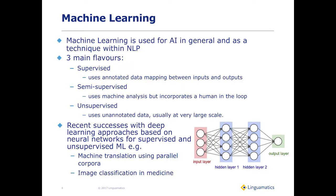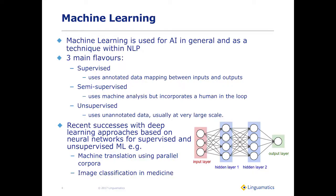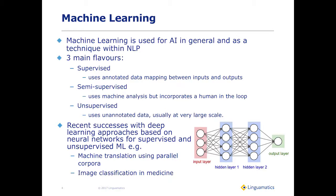There are three main flavors for supervised machine learning: where you use annotated data mapping between inputs and outputs and learn from that historic data; semi-supervised, where you have machine analysis but more of a human in the loop deciding whether something is good or bad; and unsupervised, where you use large amounts of data to understand patterns within it. There have been recent successes with deep learning, based on neural networks, used for both supervised and unsupervised machine learning.